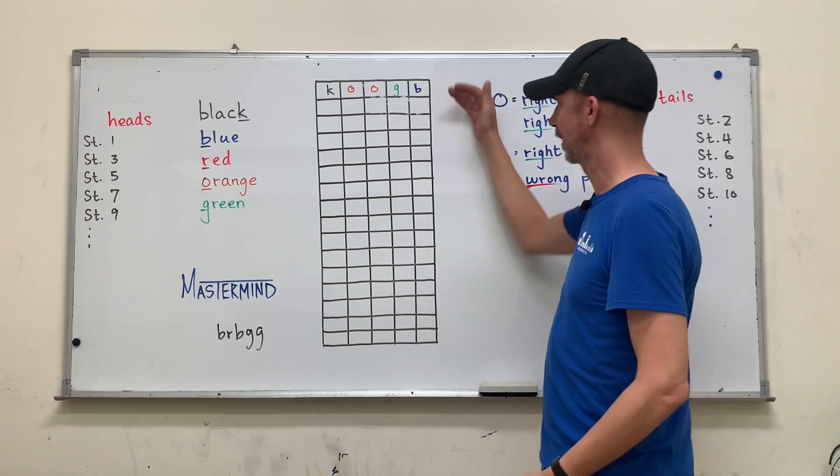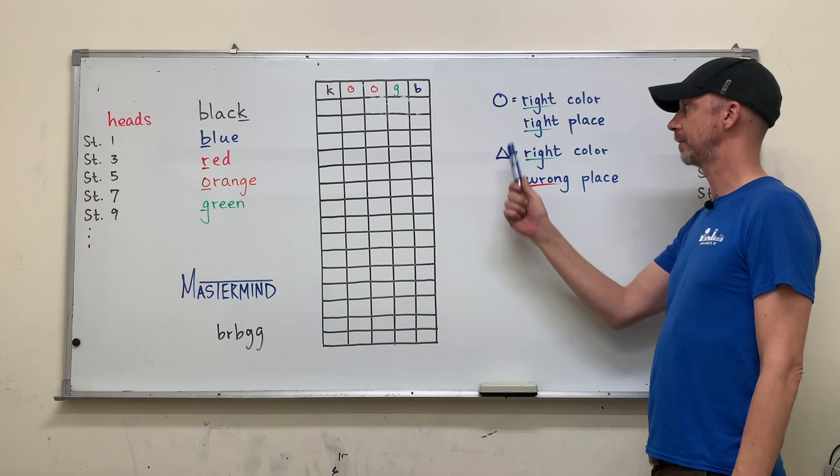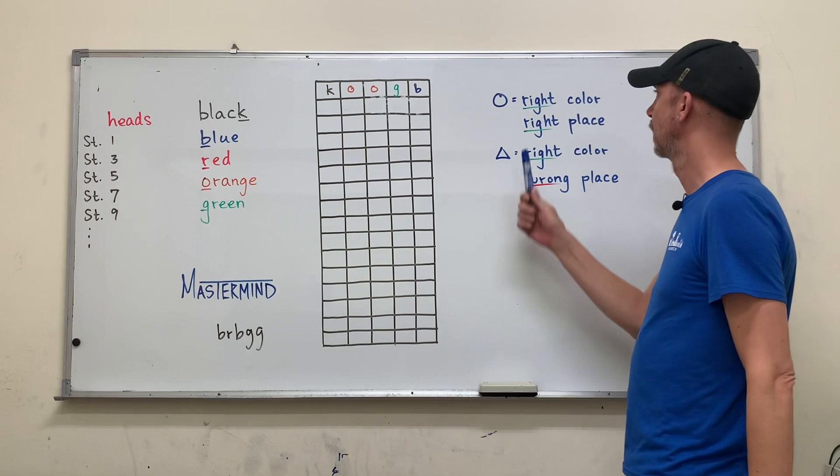So how do I give them any information? Remember, my real answer is blue, red, blue, green, green. So I have these two indicators, a circle and a triangle. And the students need to know what these mean before we do anything.